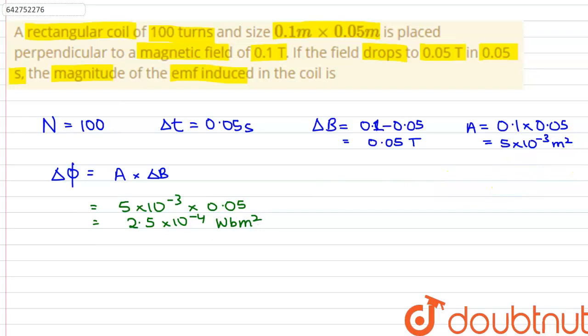The formula to calculate the induced EMF is given by epsilon, which is equals to N delta phi by delta t.